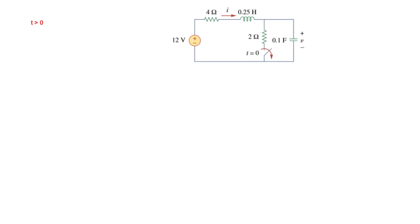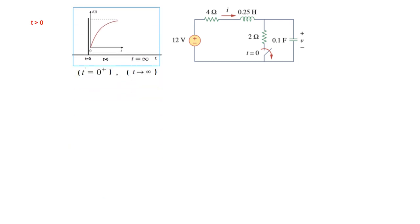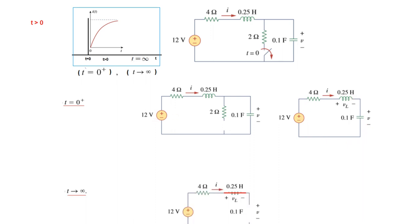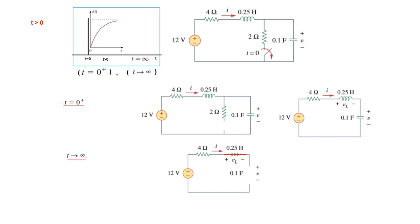Now we consider the t greater than zero portion. There are two parts: the transient portion at t zero plus, and the steady state at t infinity. At t zero plus, the switch is open but the inductor is not yet a short circuit and the capacitor is not yet open, because we are in the transient period. At t infinity, the inductor becomes a short circuit and the capacitor becomes an open circuit, giving us the steady-state circuit.